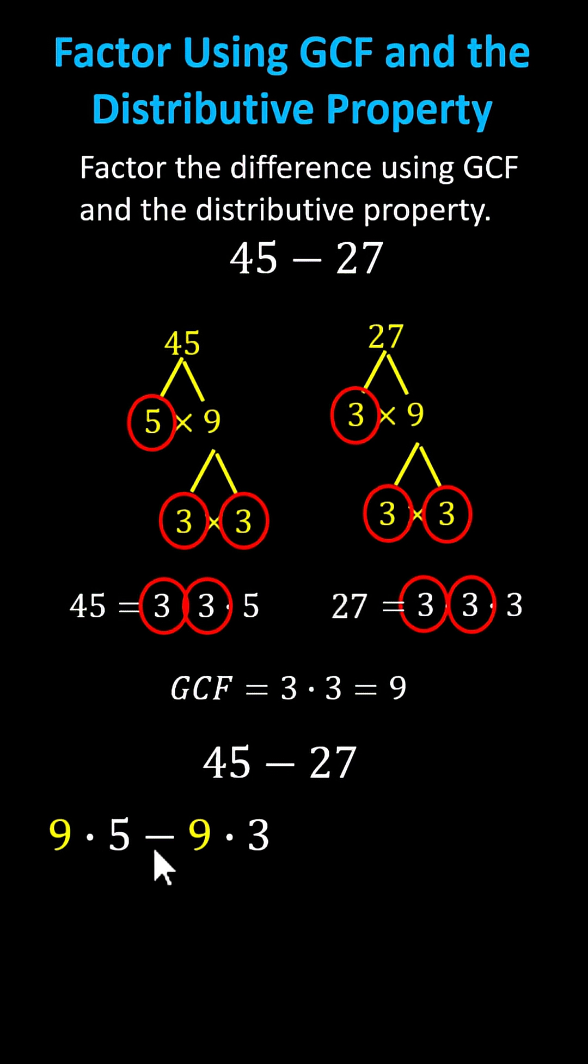Notice in this form, we can factor out the 9. We factor out the 9 for both 45 and 27. We can see we're left with the difference of 5 and 3. 45 minus 27 is equal to 9 times the difference of 5 and 3, where the 5 minus 3 is in parentheses.